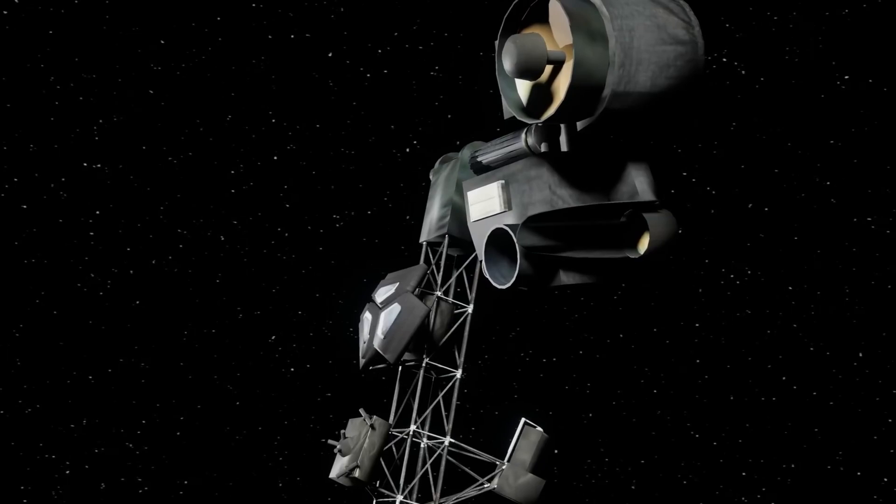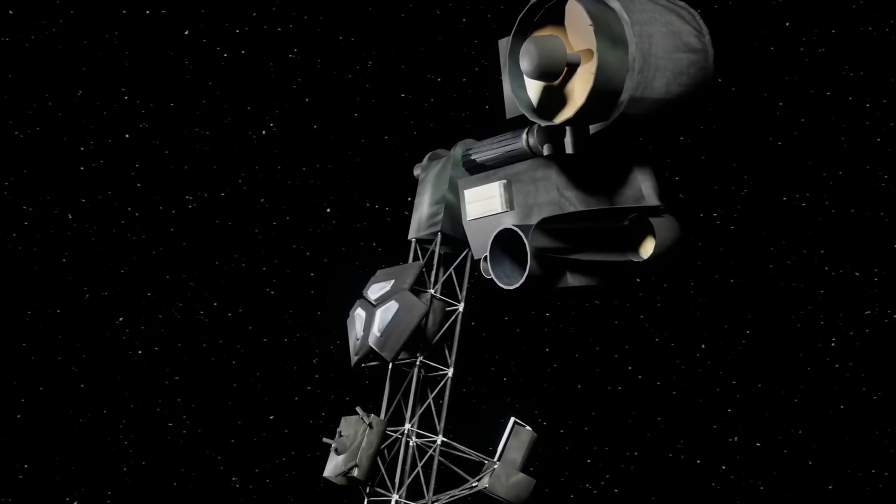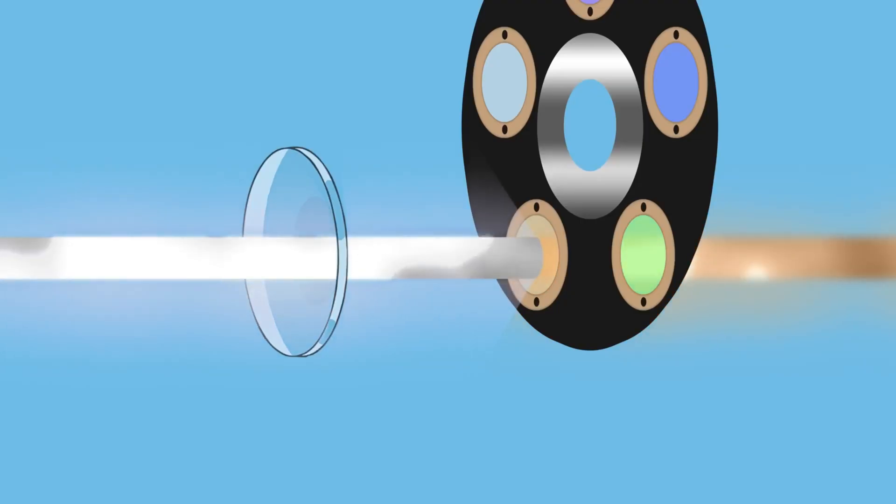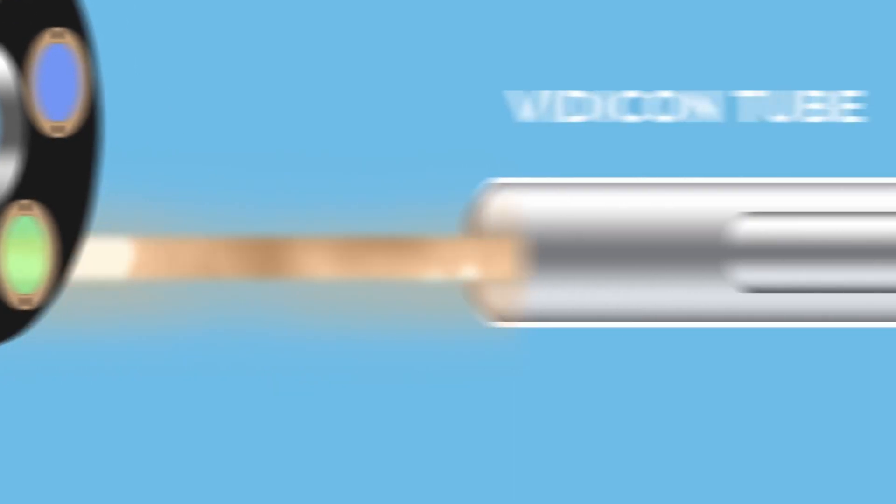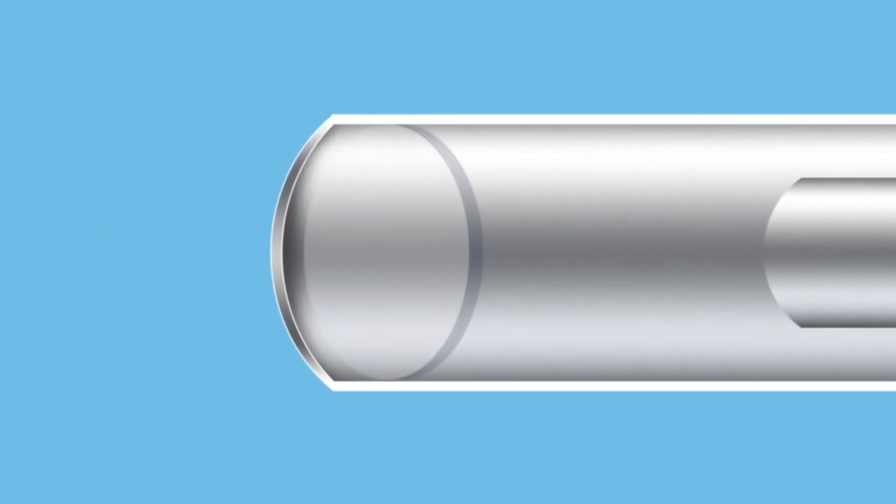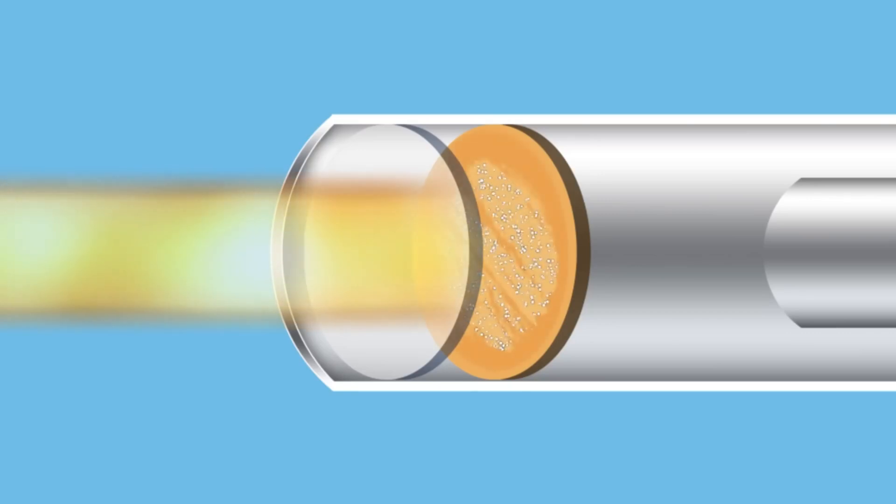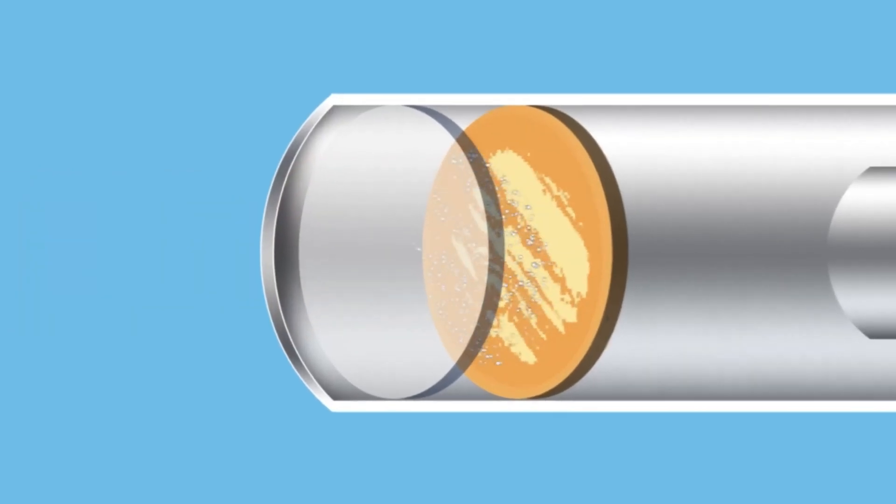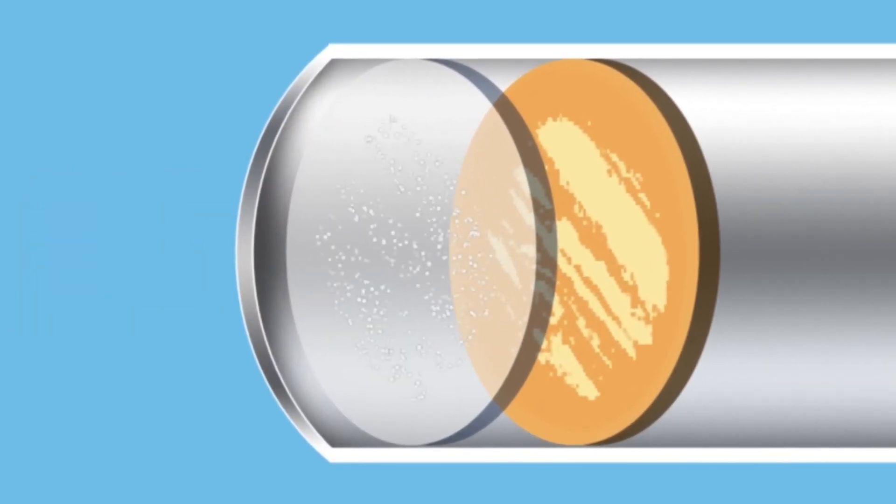But with Voyager 1, the real magic happens inside the vidicon tube. After the light passes through the lens and filter wheel, it enters into the vidicon tube. The first thing the photons hit is a see-through faceplate made from a layer which has a photoconductive target plate just behind it. When the photons hit the target plate, free electrons are created. The higher the intensity of light on any given point, the more free electrons are created. These free electrons are then attracted to the faceplate, leaving behind gaps on the target plate.